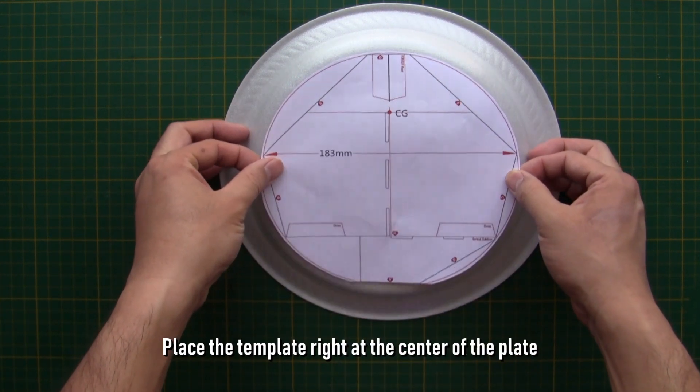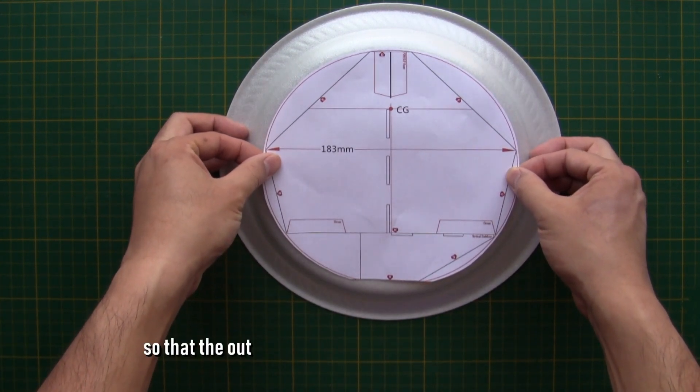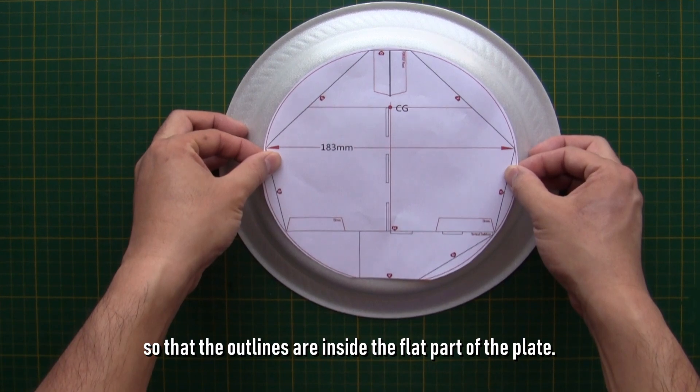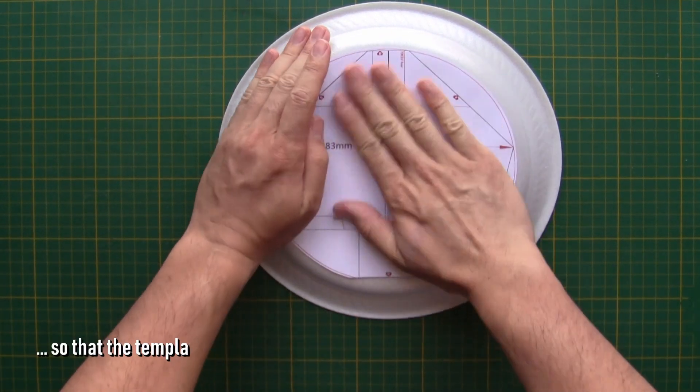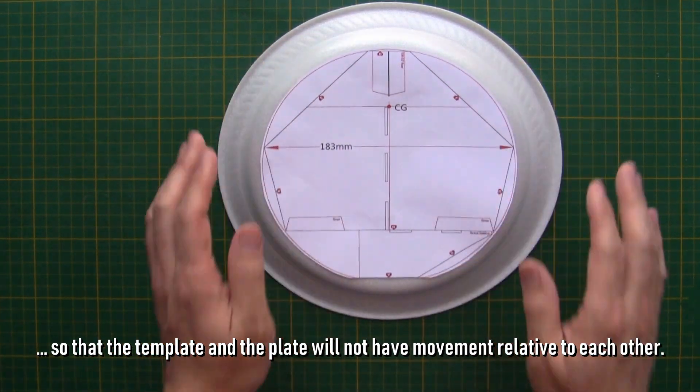Place the template right at the center of the plate, so that the outlines are inside the flat part of the plate. Press the template to stick to the plate, so that the template and the plate will not have movement relative to each other.